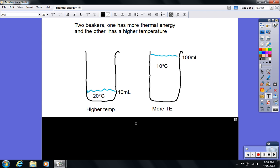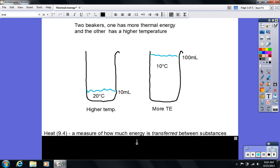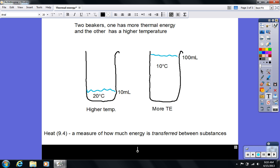There's one more definition I want to give you, and that definition is heat. We use this word pretty generically in everyday speech, but heat in science, which is, by the way, in section 9.4, is a measure of how much energy is transferred between substances. So heat is a flow of energy, a movement of energy. And it's also a way of doing work, and so we'll talk about that a little more later.